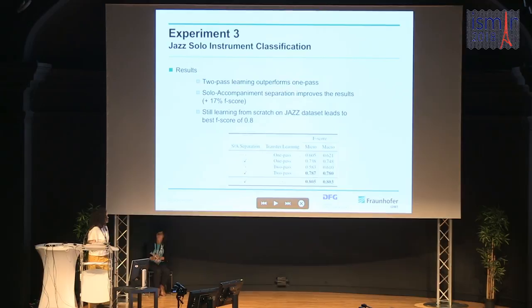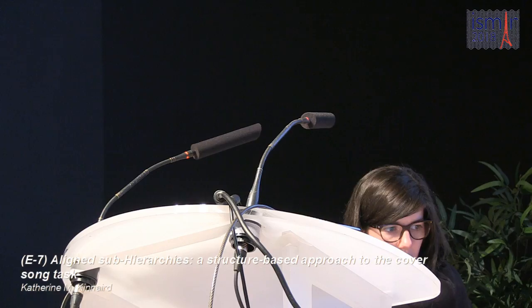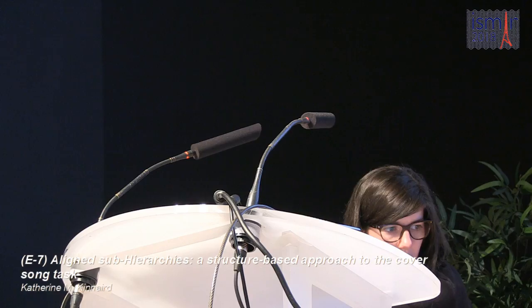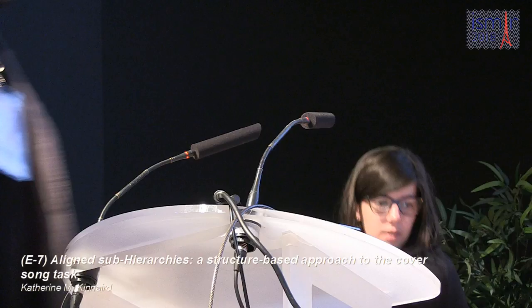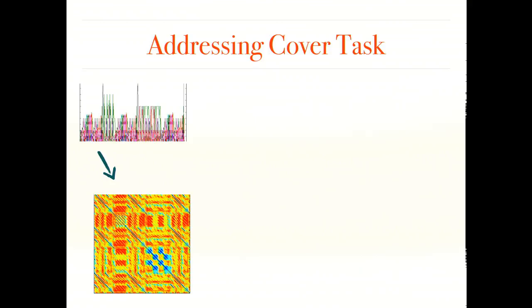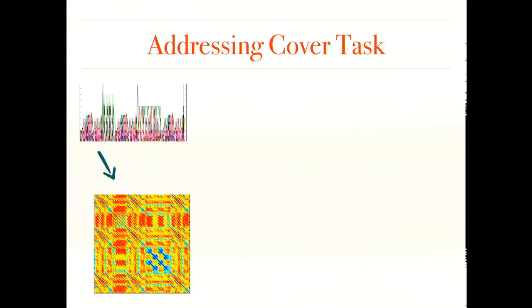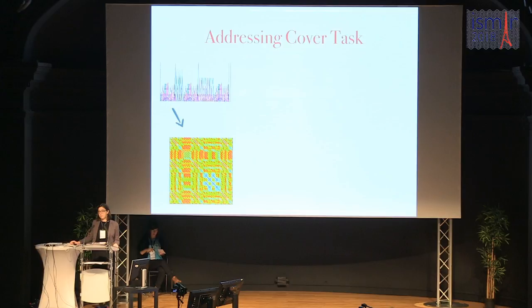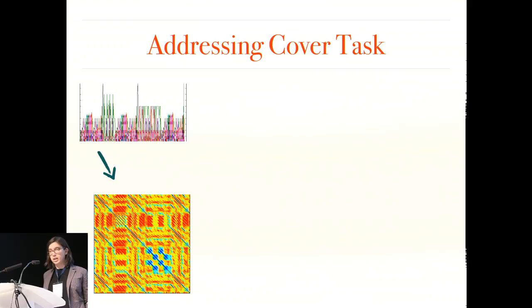Paper E7 is presented by Catherine Kinnaird: 'Aligned Sub-Hierarchies: A Structure-Based Approach to the Cover Song Task.' I'm dealing with the cover song task. Typically we have some signal — audio or score — post-processed into a matrix representation like a self-dissimilarity matrix, from which we extract structure or features. In my case I look at structure. We could build aligned hierarchies showing all possible decompositions of a song aligned on one common time axis, but I take it further — I assume I don't have access to the original signal.